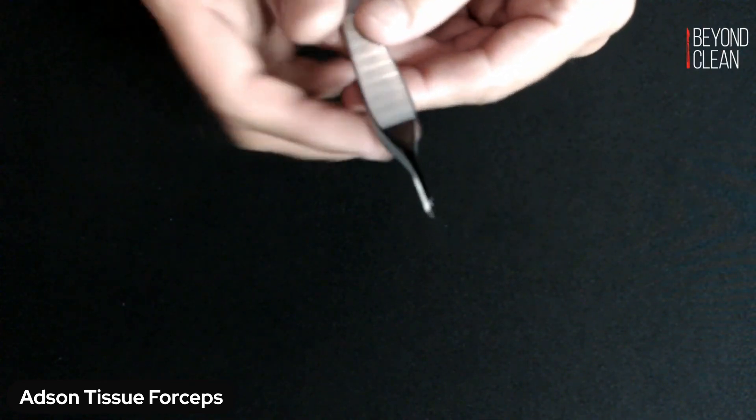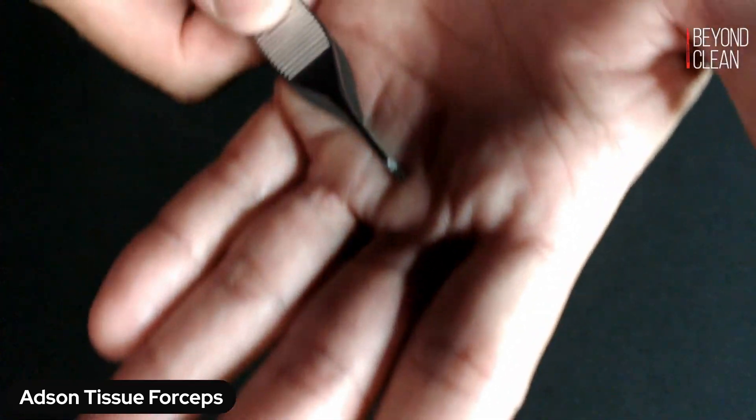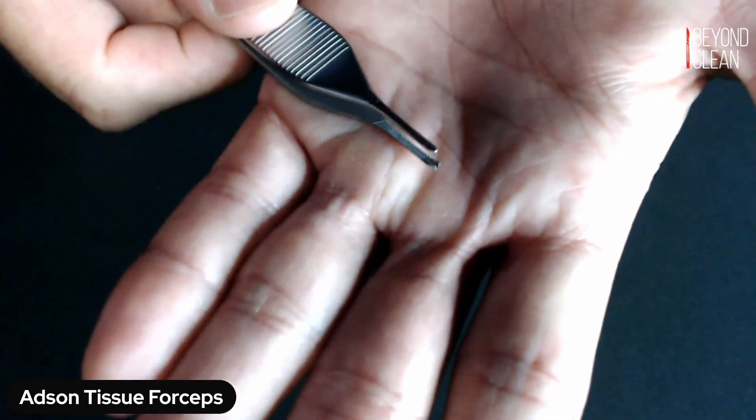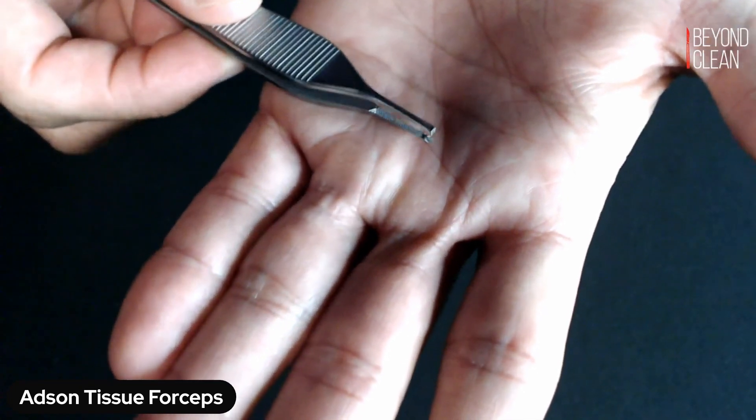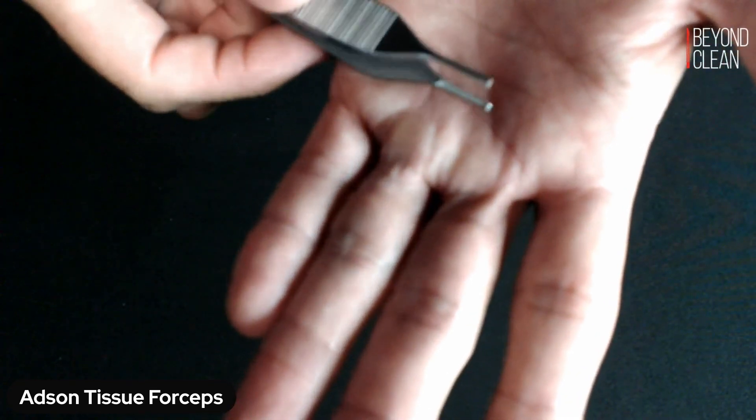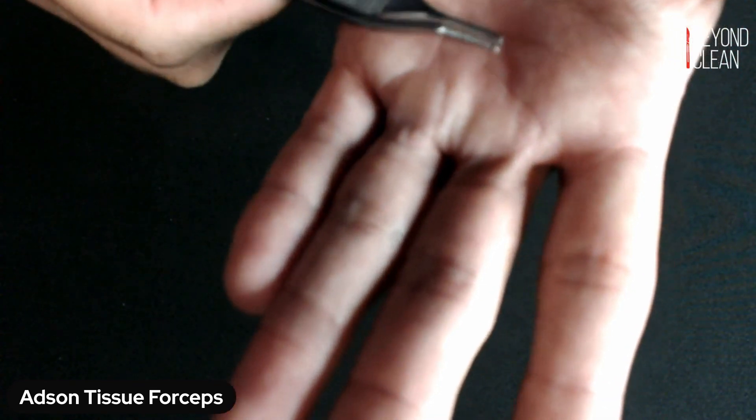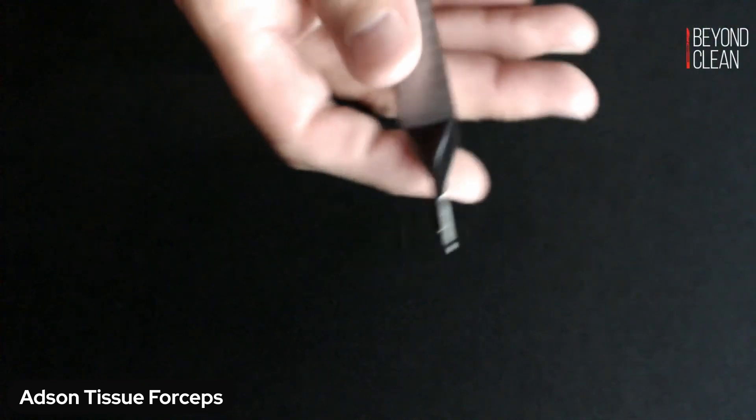Anytime you're looking at forceps, like we've said in other videos, you're going to want to make sure that those jaws are aligned, that they're closing straight on top of one another, that you're not seeing any overlap as you close, that you're not hearing a click as you're closing them and not feeling any resistance.